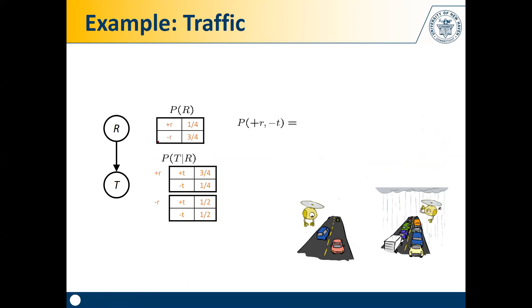Let's make things more interesting. Assume a Bayes net for traffic where R represents raining and T represents traffic. For R, the CPT is just the probability of R occurring. For T, the CPT is the conditional probability of T conditioned on R. How can we calculate the probability of +R and ¬T? The first element is P(+R) given its parents — since R has no parents, it's just P(+R).